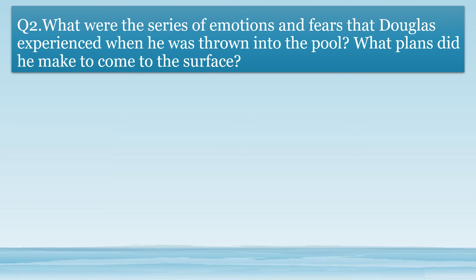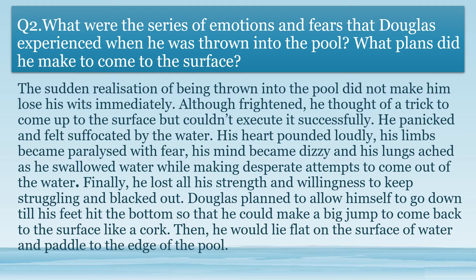Question number 2: What were the series of emotions and fears that Douglas experienced when he was thrown into the pool? Question number 3: What plans did he make to come to the surface? Answer: The sudden realization of being thrown into the pool did not make him lose his wits immediately. Although frightened, he thought of a trick to come up to the surface but couldn't execute it successfully. He panicked and felt suffocated by the water. His heart pounded loudly. His limbs became paralyzed with fear, his mind became dizzy, and his lungs ached as he swallowed water while making desperate attempts to come out. Finally, he lost all his strength and willingness to keep struggling and blacked out.